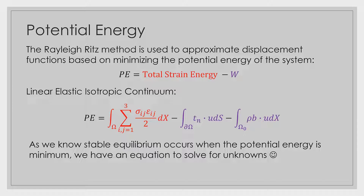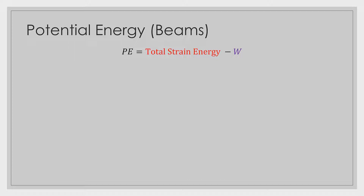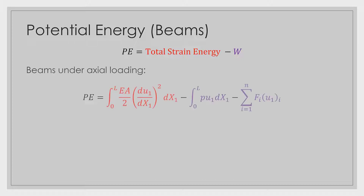Not too bad. And again, this is going to be the most general case, but in this course we dealt with beams a lot too. So sometimes if we have a general case, we can simplify it for specific cases. That's what we're going to do here with beams. The formula for the potential energy remains the exact same: total strain energy minus the work done on the system by the external loads.